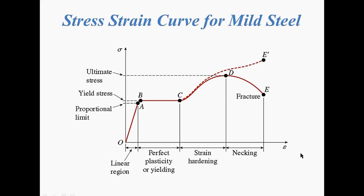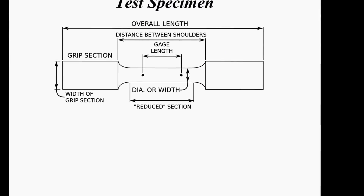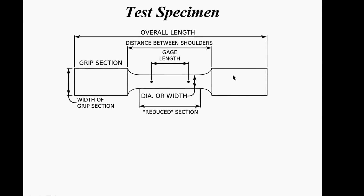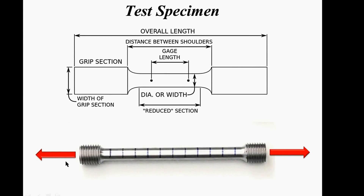Now let us see how one can plot this curve. This is a standard test specimen used for a tension test on a mild steel bar. We observe the behavior of mild steel within this gauge length. This portion goes under the grips of the universal testing machine and then tensile force is applied on the specimen. The actual specimen may look like this.